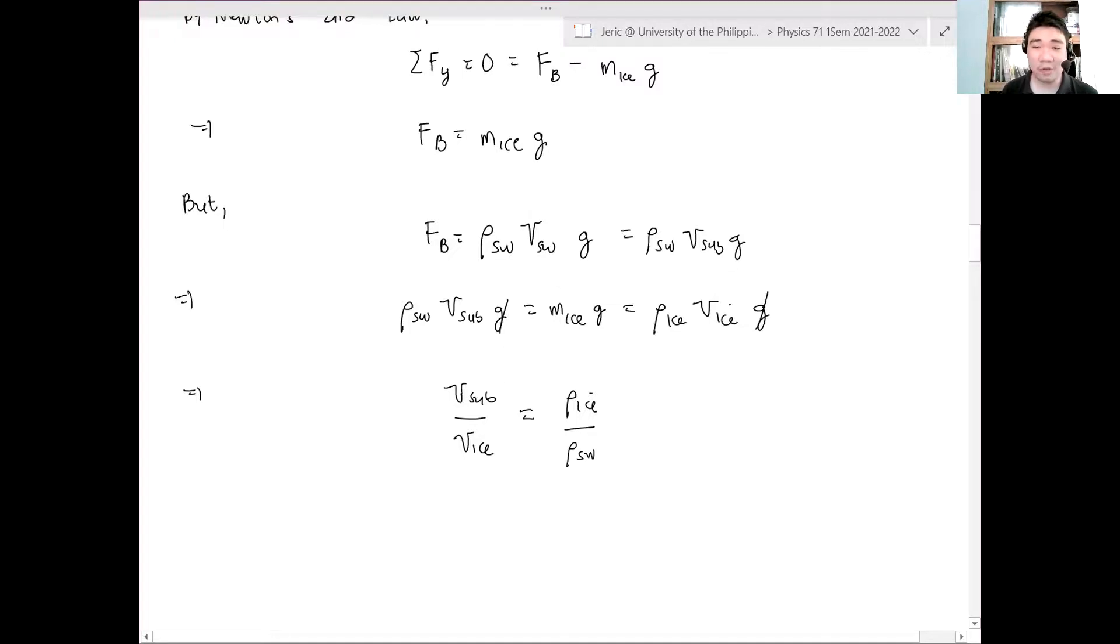Now, these two volumes here, the ratio of them, is just the fraction of the volume that is immersed in the seawater. Hence, this is what we are looking for. So this is just, hence, this is just basically the ratio of the density of the iceberg over the density of seawater.